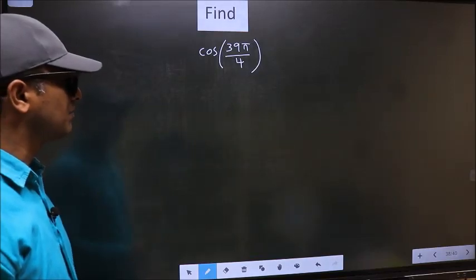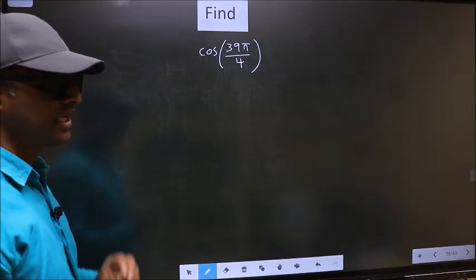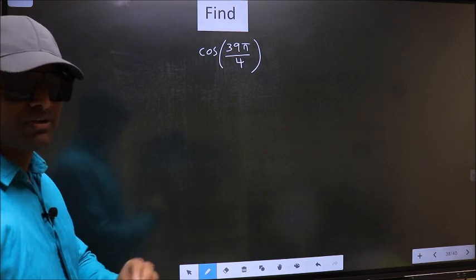Find cos 39 pi by 4. To find this, we should follow this method.